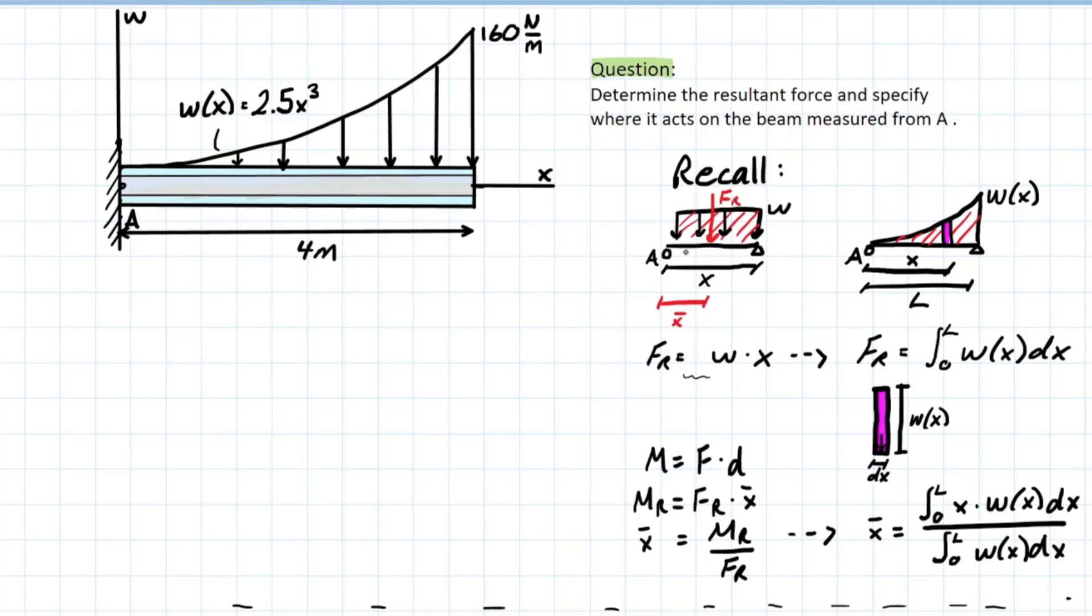So let's take the rectangular distribution that we know and we understand that fr is going to be w times x. That means the height of our distribution times the span it covers. There's a squiggle here because we know that if it was a triangular distribution, we would use one half as a coefficient.